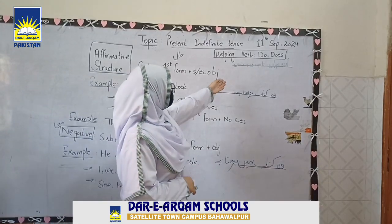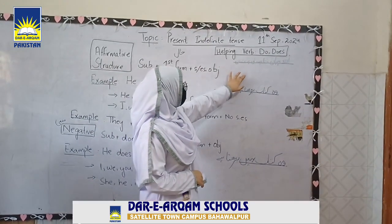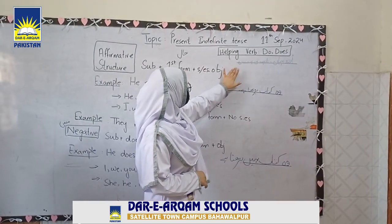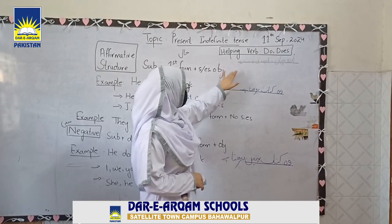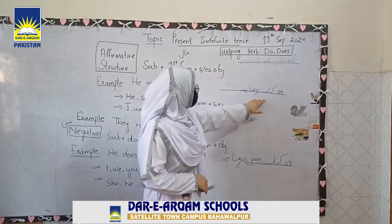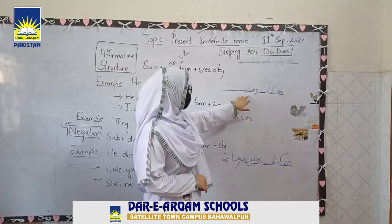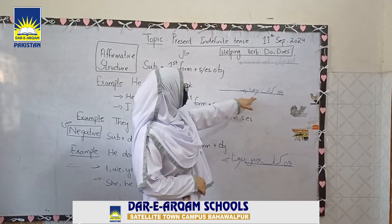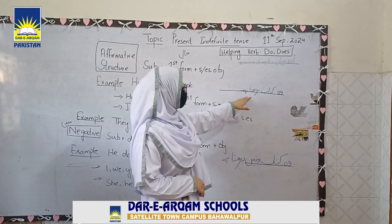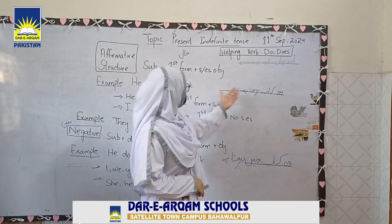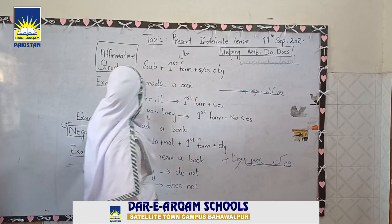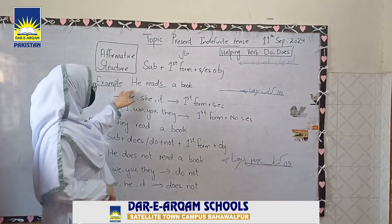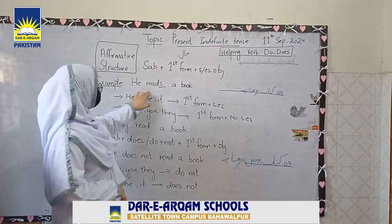In Urdu, the present indefinite tense is recognized by endings like 'hai,' 'hain,' 'ho.' For example, 'woh kitab parhta hai' — in English, this becomes: he reads a book.